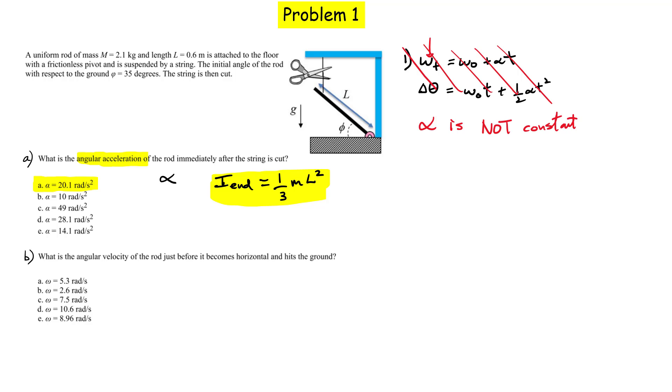So what we have to use instead to find what the final omega is, we have to use conservation of energy, right? There is no friction in this problem. So conservation of energy works quite well. So if you think about conservation of energy, we think about the rod in the initial configuration, and then we think about the rod in the final configuration. And you have to simply look at the total energy in the initial versus the final and set them equal to each other.